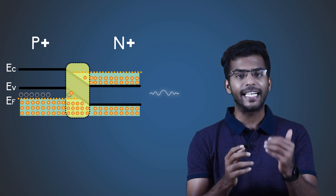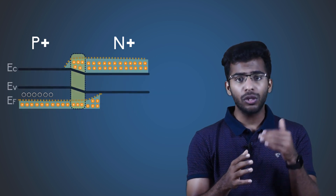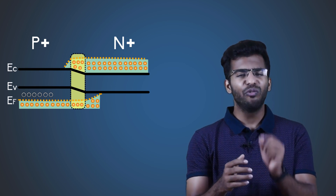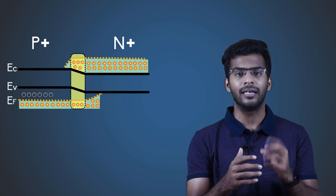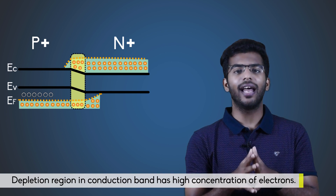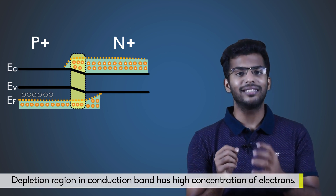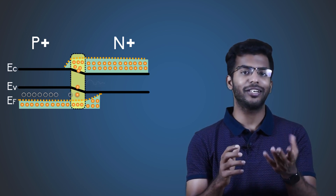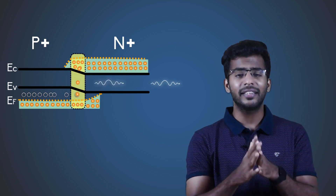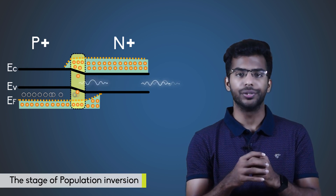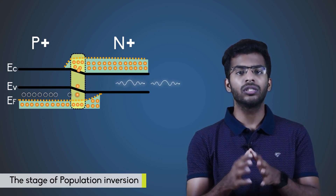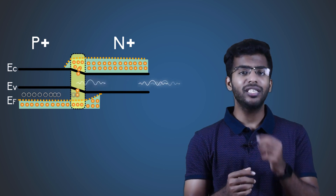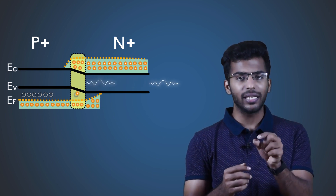If the forward bias voltage is increased to a sufficiently high value, more electrons and holes are pushed towards the depletion region, making it very thin. The depletion region in the conduction band has a high concentration of electrons, whereas the valence band has a high concentration of holes and minimal electrons. Therefore, we have a high concentration of electrons at the conduction band compared to the valence band — this is the stage of population inversion. Due to this, more photons are released as more electrons and holes recombine, and the recombination takes place continuously until the forward voltage is removed.